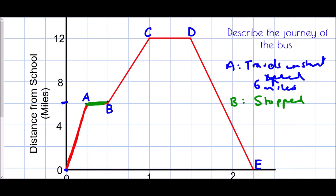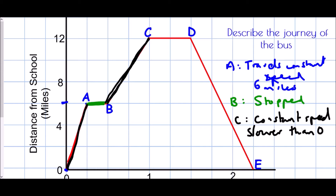Next, we go from B to C. Again, this is a straight line so we know it's constant speed. But we can also say something about that speed. Comparing it to the line from zero to A, the line from B to C is less steep. The steeper the line, the faster you are travelling. So from B to C it's actually slower than zero to A — we can say that because the line is less steep.